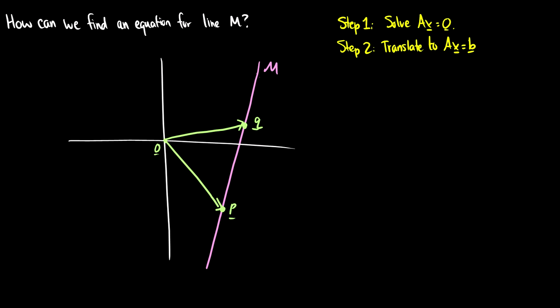First step is we can say, well, we need to get a line for ax equals 0 that is parallel to m and then we can translate it. So what is the solution to this?